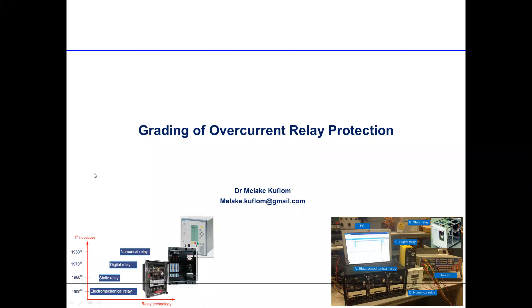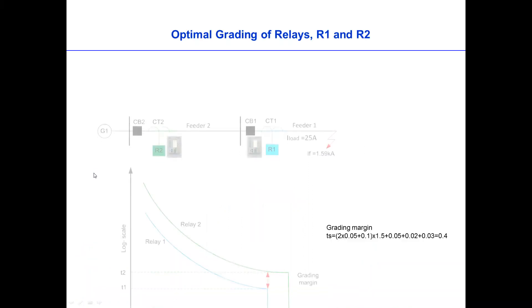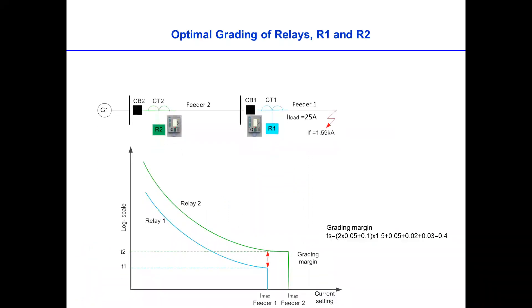Hello students, this is part 2 of the overcurrent protection. We're going to do some exercise on RADIAN. If we look back on the RADIAN network, we have two relays, Relay 1 and Relay 2, and we have fault on the end.